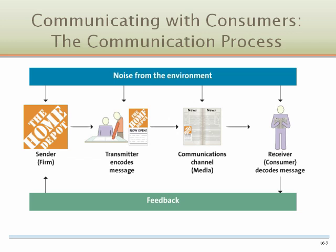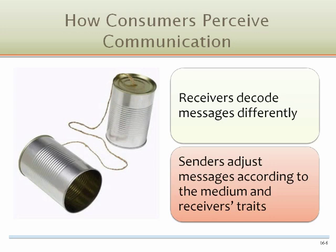The feedback loop allows the receiver to communicate with the sender, thereby informing the sender whether the message was received and decoded properly. Each receiver may interpret the sender's message differently, and senders often adjust their message according to the medium used and the receiver's level of knowledge about the product or service.